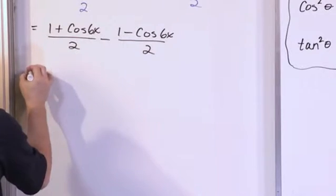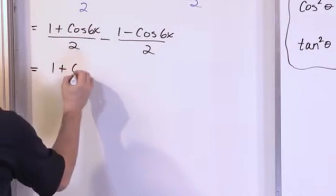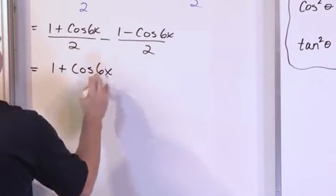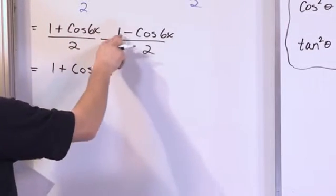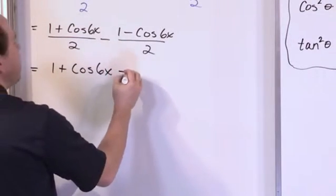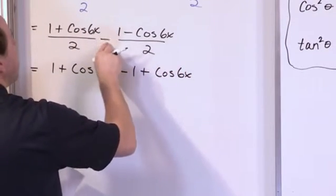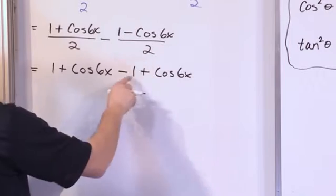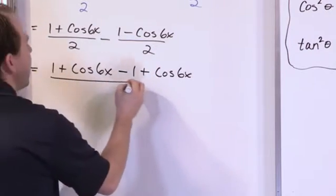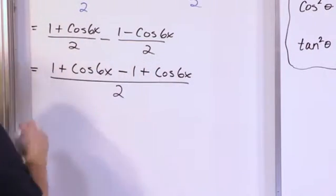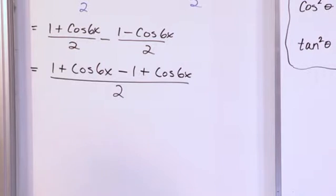So what you have here is you just go ahead and subtract these fractions. You'll have 1 plus cosine 6x, and you have to be careful when you apply the subtraction here. It's going to be minus 1 plus cosine 6x. This negative is sort of applied to the 1 and applied to the negative there, giving you negative and positive on the bottom. You keep the same common denominator just like you do anytime you subtract fractions.